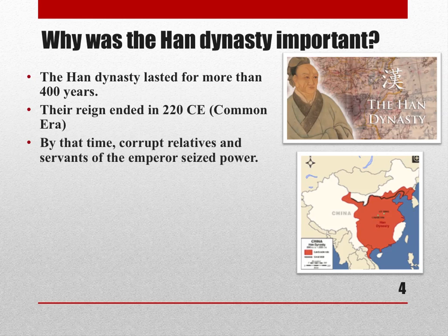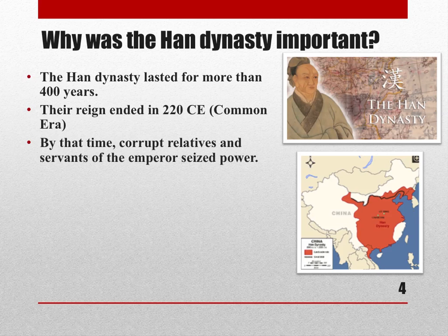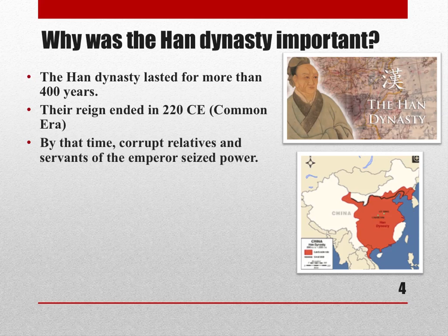As the Han dynasty started to come to an end, corrupt relatives and servants of the emperor began trying to seize power. This is common throughout history: when one family is in power for a very long time, they tend to get corrupt and lazy, thinking they're entitled to power and stopping doing things like ruling well or looking after the interests of the people. When that happens, things tend to slide downhill rather quickly.